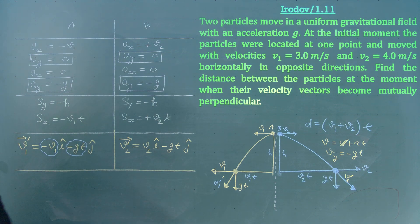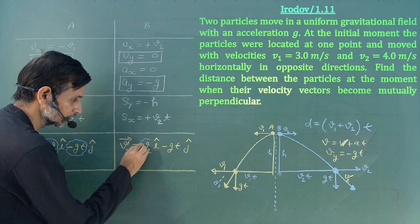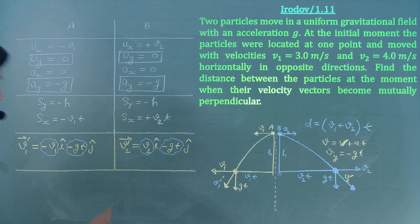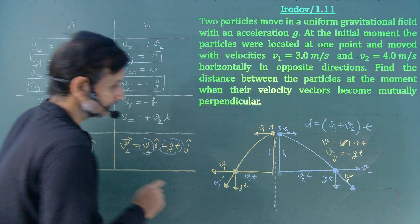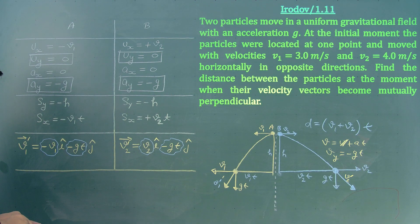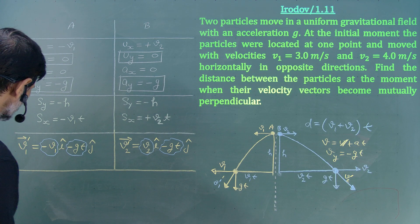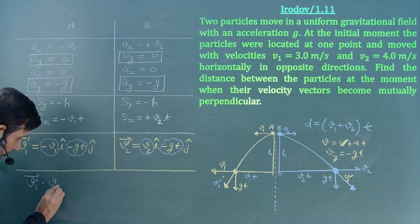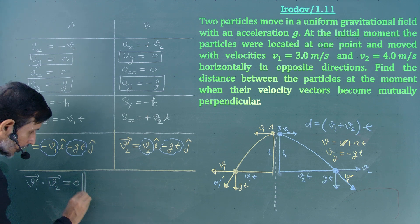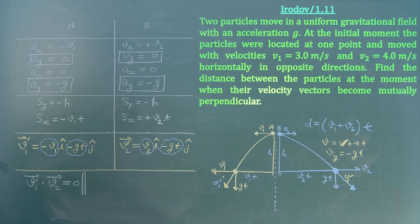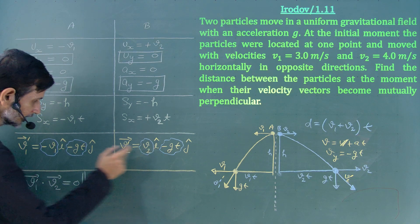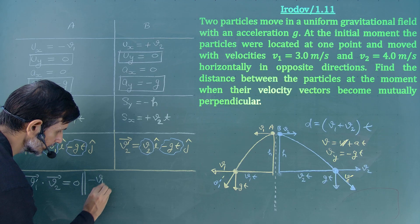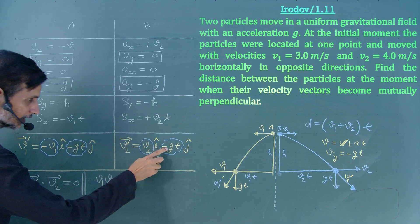So the velocity vector v1-dash = (−v1)î + (−gt)ĵ and the velocity vector v2-dash = (v2)î + (−gt)ĵ. Since these two velocity vectors are given to be perpendicular, their dot product must be zero. Computing the dot product: multiply i-parts with i-parts and j-parts with j-parts: (−v1)(v2) + (−gt)(−gt) = 0, which gives −v1·v2 + g²t² = 0.